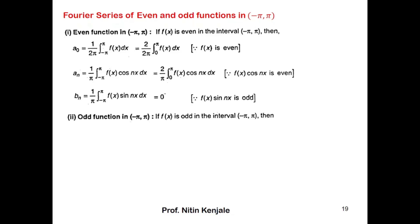Now let us see what happens to the Fourier coefficients when f(x) is odd. A-naught's expression is 1 over 2pi times the integral of f(x) dx from minus pi to pi. Since f(x) is an odd function and the limits are symmetric, this integral is equal to 0.